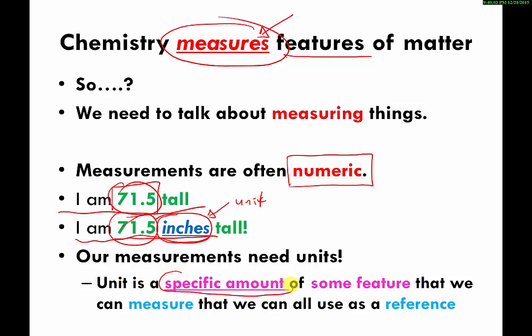The unit is a specific amount that people come to an agreement on. A specific amount of some certain feature that we can actually measure and that we can all use as a common reference.